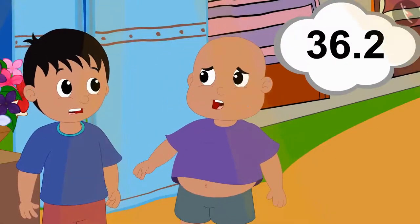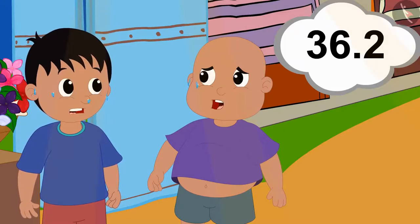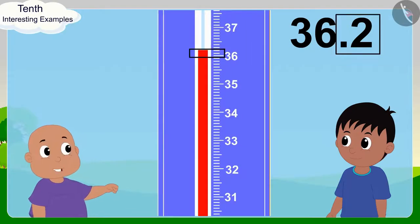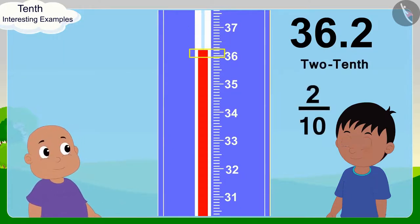Well, if tomorrow's temperature is 36.2 degrees Celsius, then we can say that 0.2 degrees Celsius is 2 tenths of a degree Celsius or 2 by 10 of a degree Celsius. Yes, Bablu said excitedly.